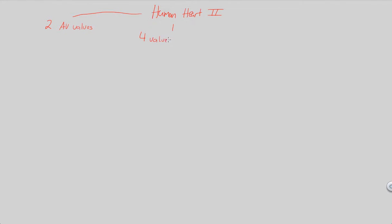We have four valves total. Those valves serve the purpose of preventing backflow, and we want to make sure we prevent backflow in order to maintain a unidirectional flow of blood. Let's take a look at the rest of the valves, as shown in figure 42.6.